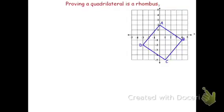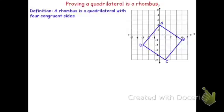In this video, we'll review how to prove if a quadrilateral is a rhombus. To begin, let's review the definition of a rhombus. A rhombus is a quadrilateral with four congruent sides.